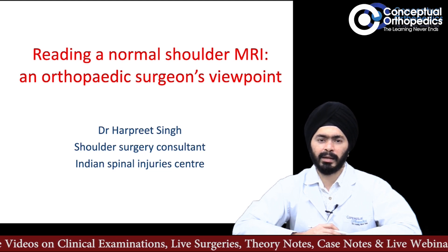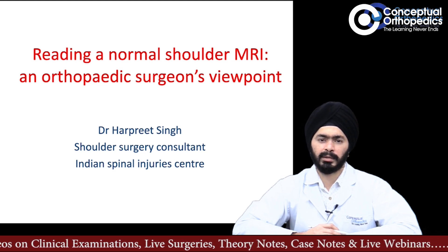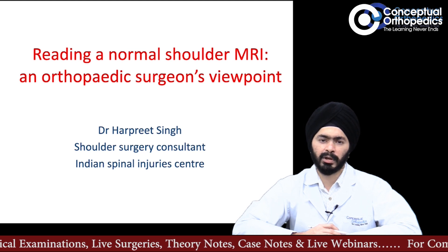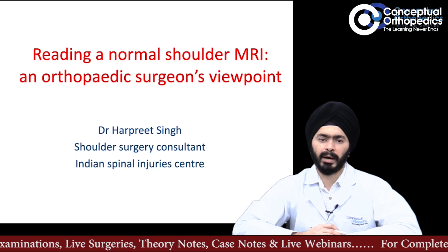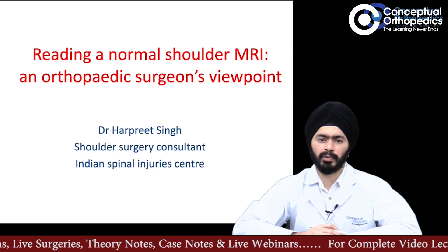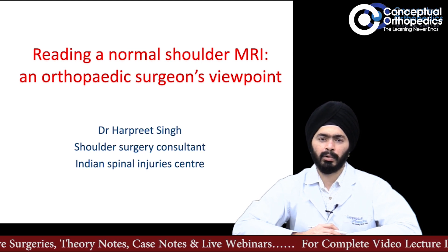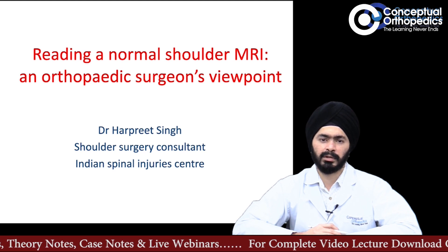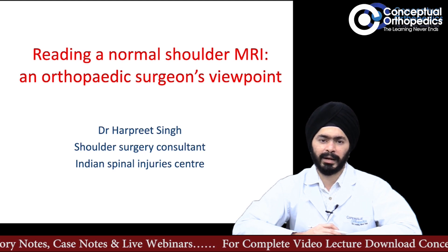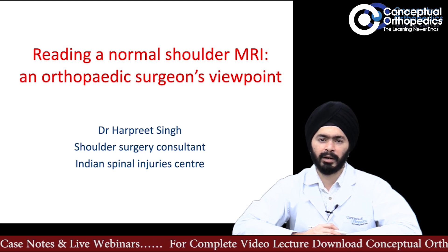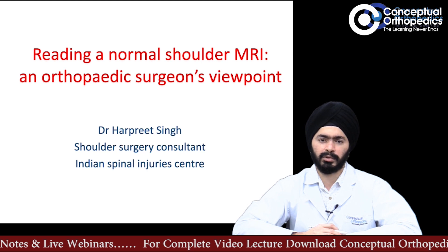CT scan helps the orthopedic surgeon look at the bony structures, and MRI is extremely useful in looking at the soft tissue structures — the muscles, the tendons, and the intra-articular structures.